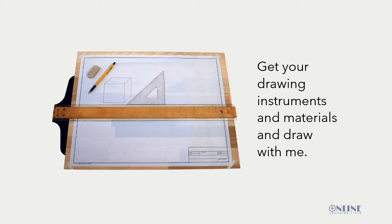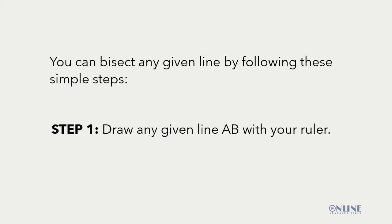You will need a drawing board, drawing papers, a pencil, a ruler or a T-square, and a pair of compasses. You can bisect any given line by following these simple steps. Step 1: Draw any given line AB with your ruler.